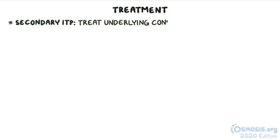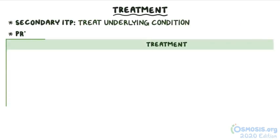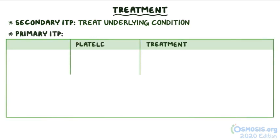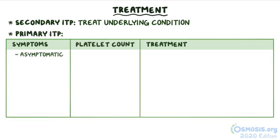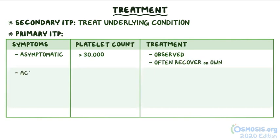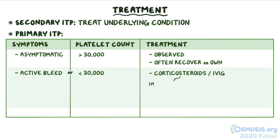Individuals with secondary ITP are treated for their underlying condition, while treatment of primary ITP depends on the platelet count and symptoms. Asymptomatic patients with a platelet count over 30,000 can be observed and often recover on their own. Patients with an active bleed or those with a platelet count below 30,000 are usually started either on corticosteroids or intravenous immunoglobulin, or IVIG for short.